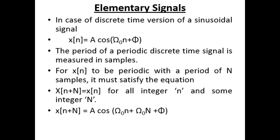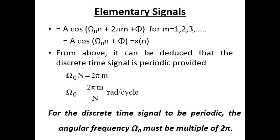For the discrete time sinusoidal signal x(n) = A·cos(ω₀n + φ), the period is measured in samples. For x(n) to be periodic with period N, it must satisfy x(n + N) = x(n). Expanding: x(n + N) = A·cos(ω₀n + ω₀N + φ) = A·cos(ω₀n + 2πm + φ) = x(n), requiring ω₀N = 2πm, or ω₀ = 2πm/N radians per cycle. Thus, for a discrete time signal to be periodic, the angular frequency must be a rational multiple of 2π.